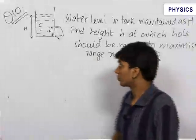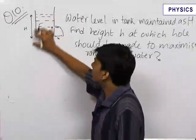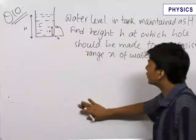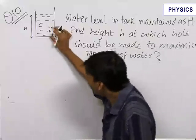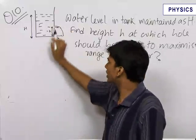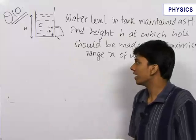Here is another question. We have a tank of water with water level at height H. This water level is always maintained by some external mechanism. We need to find the height h above the ground where a hole should be made in the tank so that the water coming out has maximum range x.